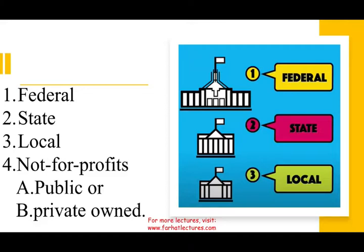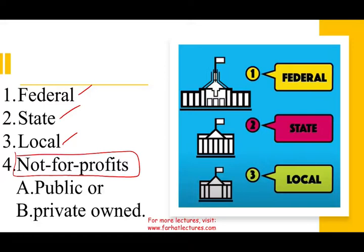What makes this topic a little bit complicated is the fact that we have in the U.S. three levels of government: federal, state, and local. In addition to that, we have not-for-profit, which is not a government. Under not-for-profit organizations, not-for-profits could be public, which is governmental, or they could be private. So notice we have five different categories of units, and we need to understand which accounting standard regulates which body.